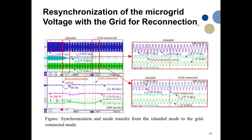Once the microgrid and main grid voltages have the same magnitude and phase, we turn on the circuit breaker to connect the microgrid to the main grid. A zoomed view of the converter current at the moment of connection shows no transient current — the green waveform remains smooth — demonstrating that the microgrid can be seamlessly connected to the main grid without any transient overcurrent.